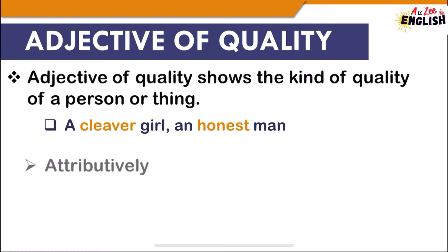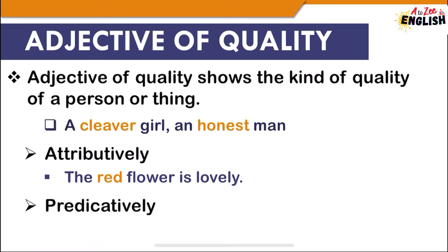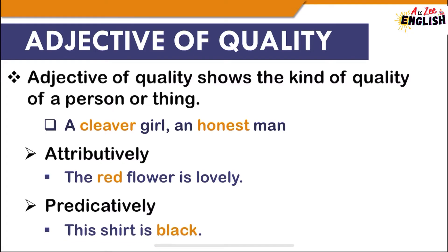Adjective of quality is further divided into two categories. The first is attributive, in which the adjective comes before the noun — for example, 'the red flower is lovely.' The second category is predicative, in which the adjective comes after a linking verb — for example, 'this shirt is black,' where the adjective comes after the linking verb 'is.'